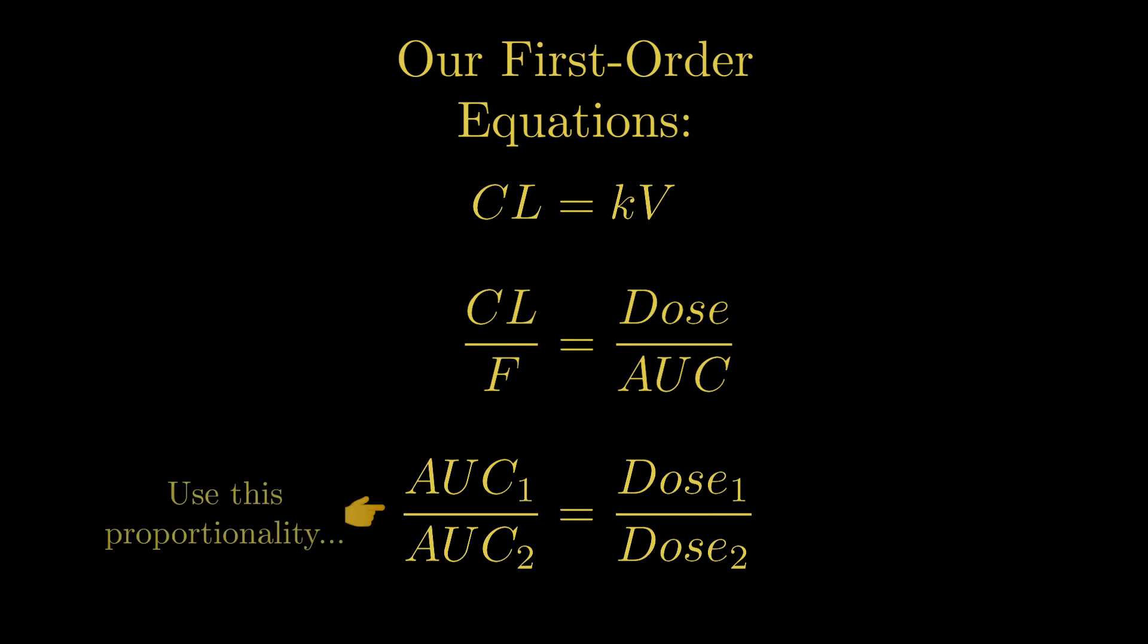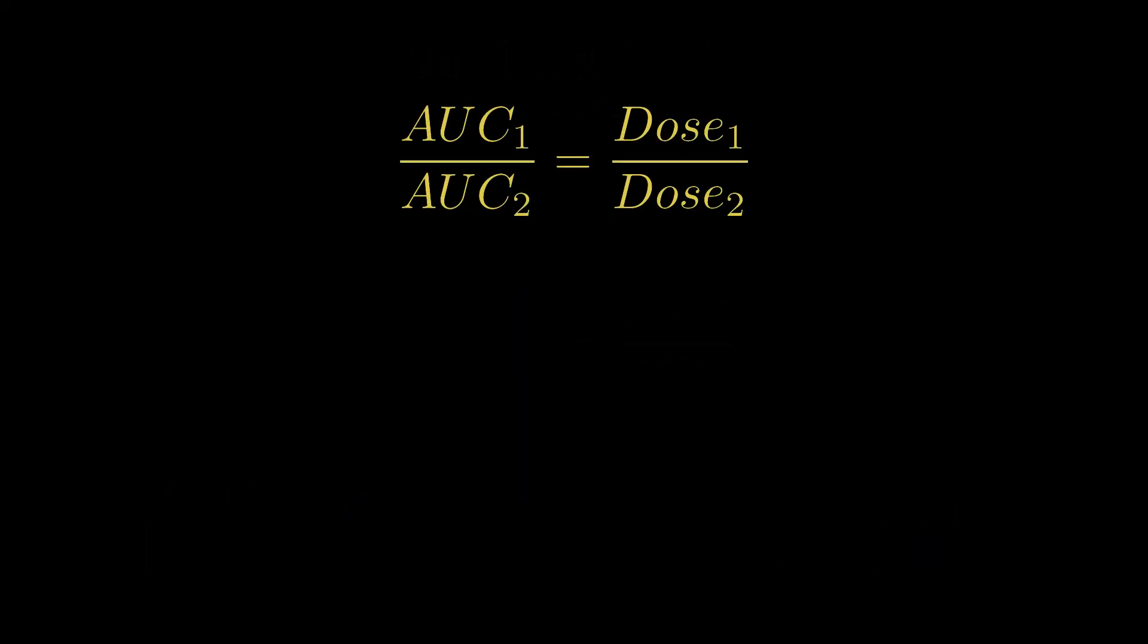Therefore, we can use the pharmacokinetic parameters given and extrapolate the correct dosage in order to obtain an AUC of 12.5 mg hour per liter. We may use the equation AUC1 over AUC2 is equal to dose 1 over dose 2.